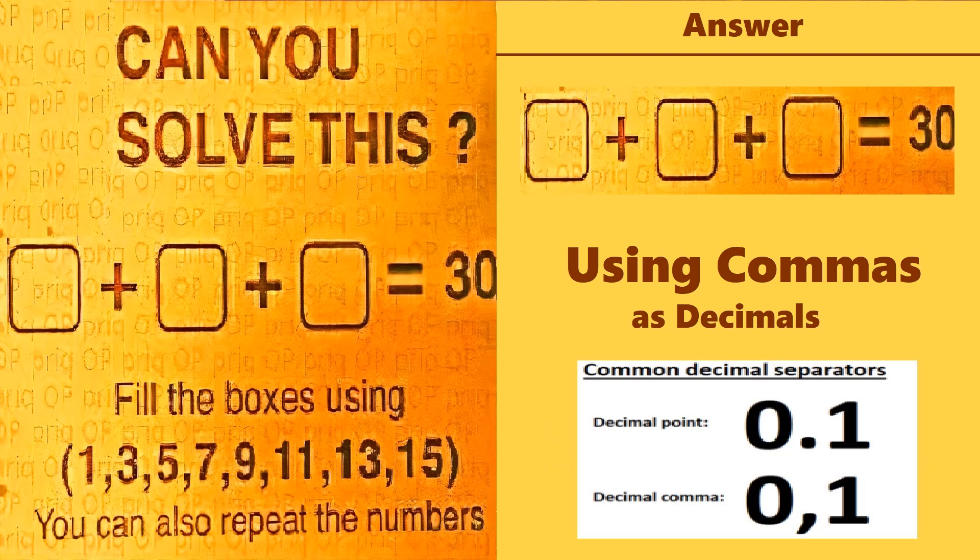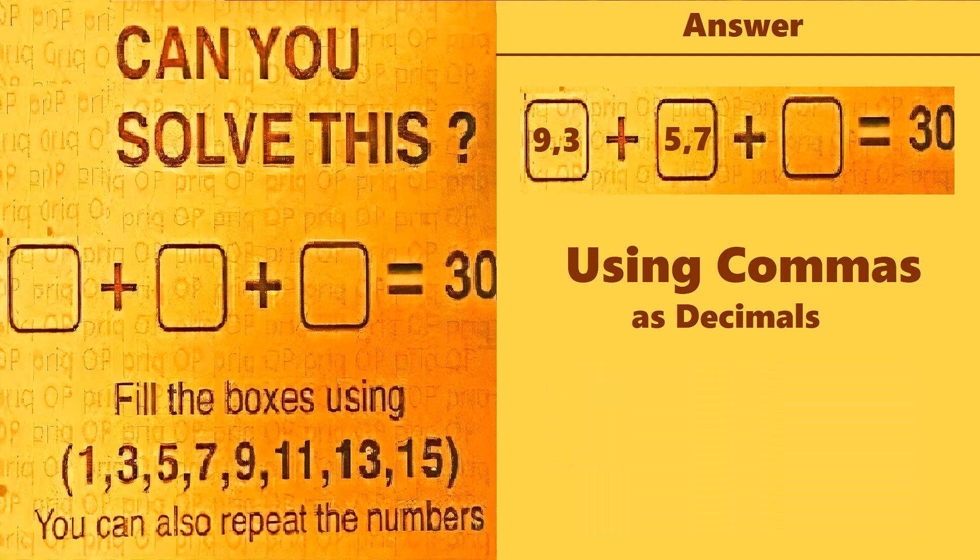Let's put that in. In the first box we can put 9 comma 3, which gives you 9.3. In the second box we have 5.7, and in the third box we have 15. So if we add 9.3 and 5.7, we get 15, and then 15 plus 15 is 30.